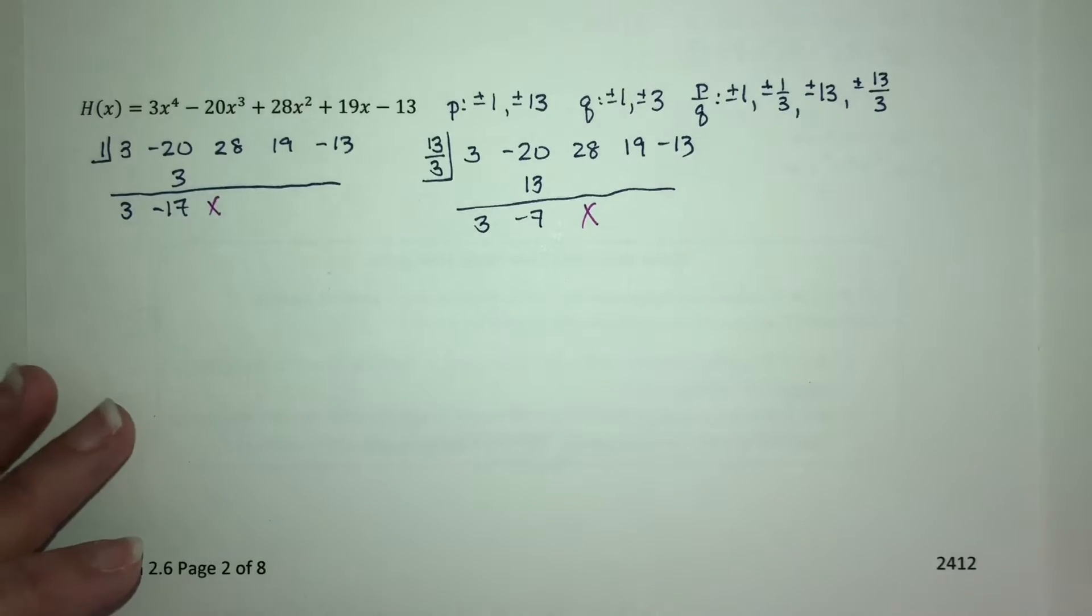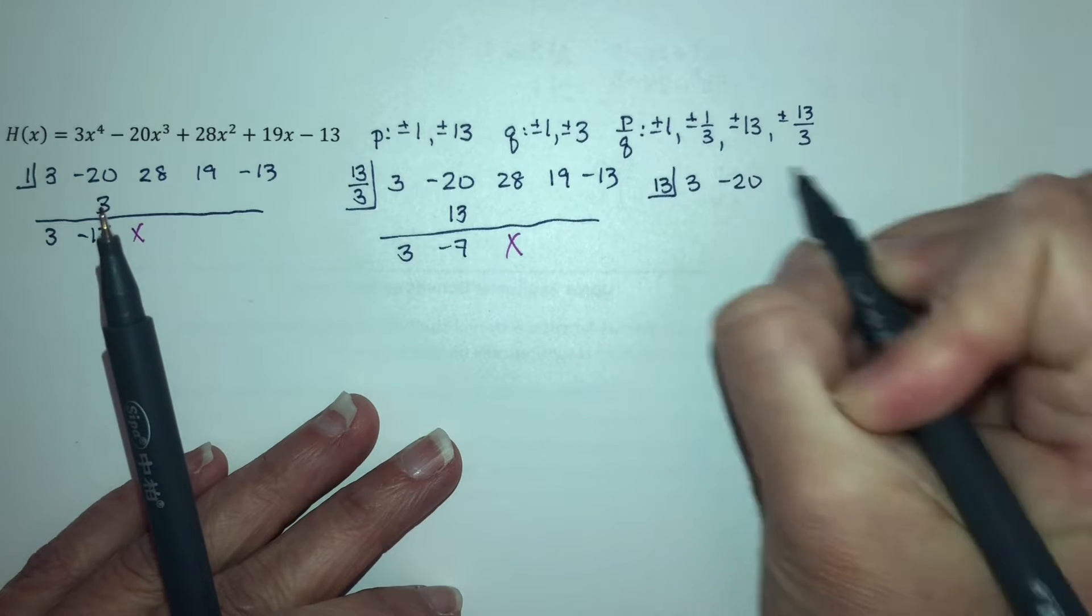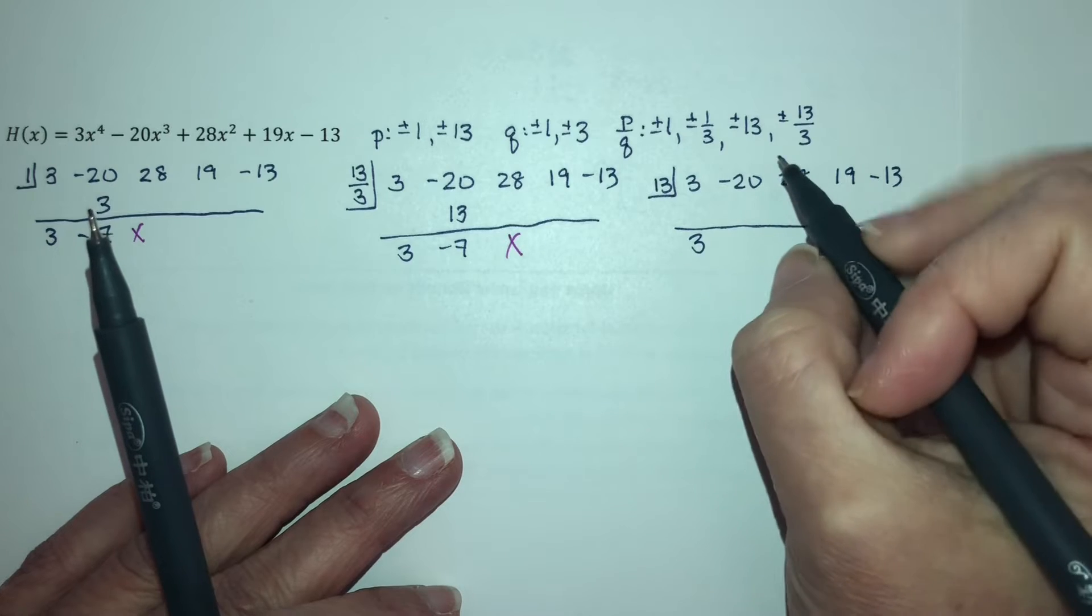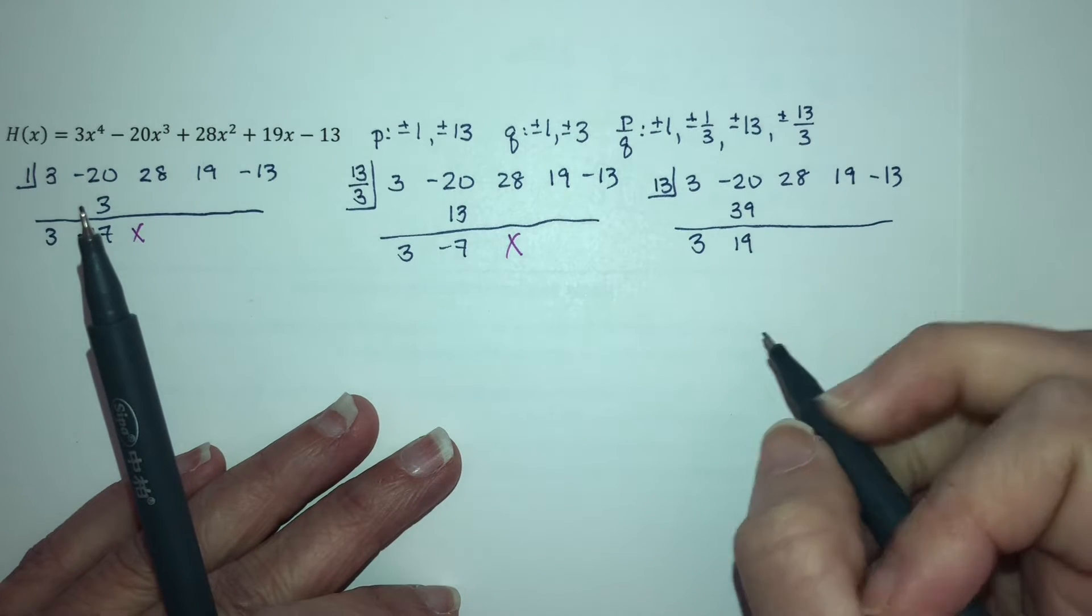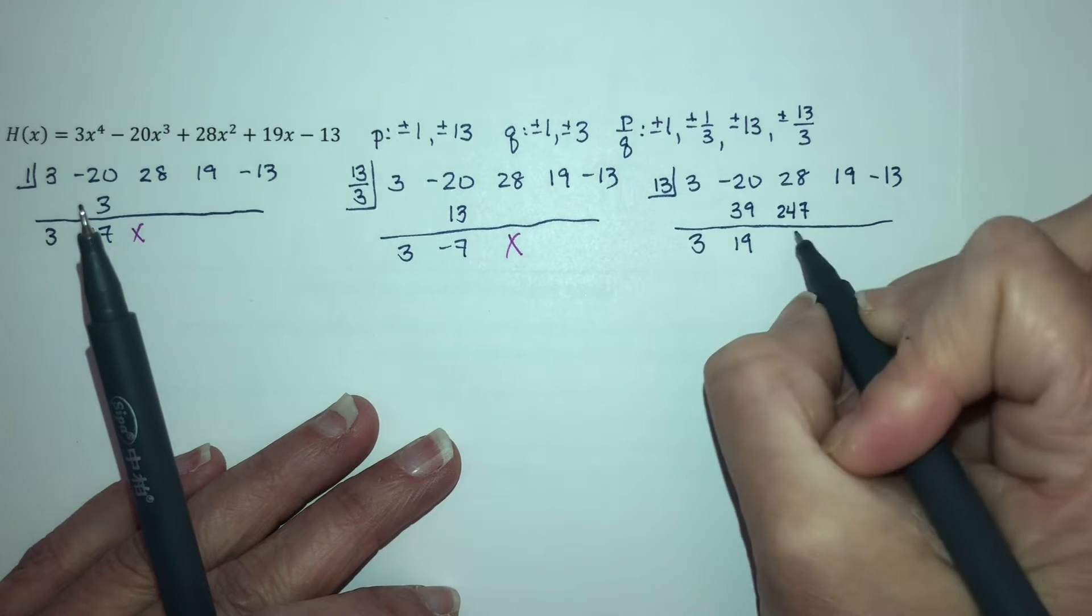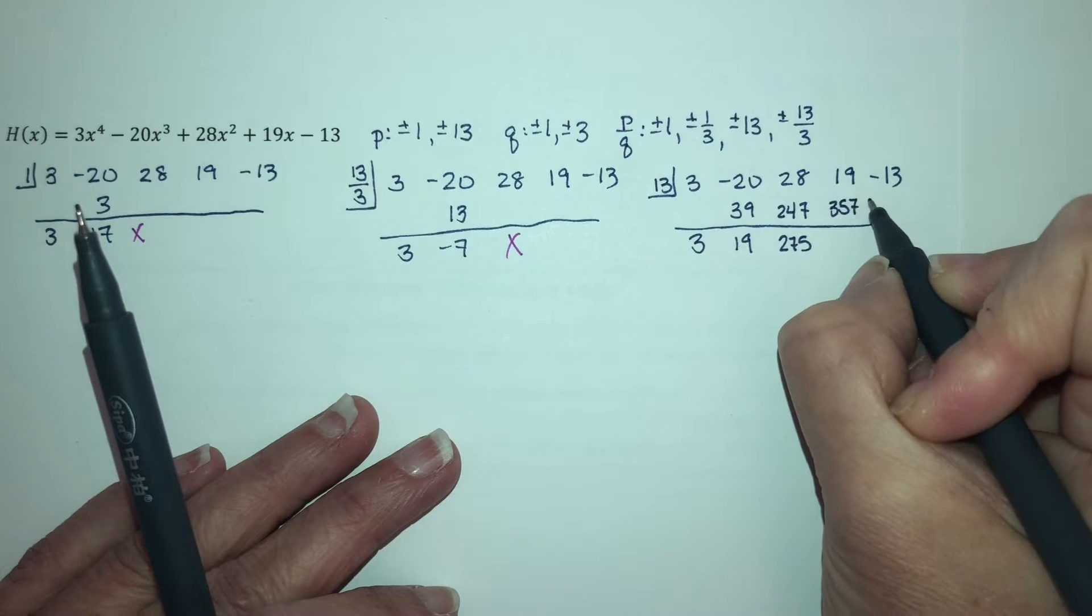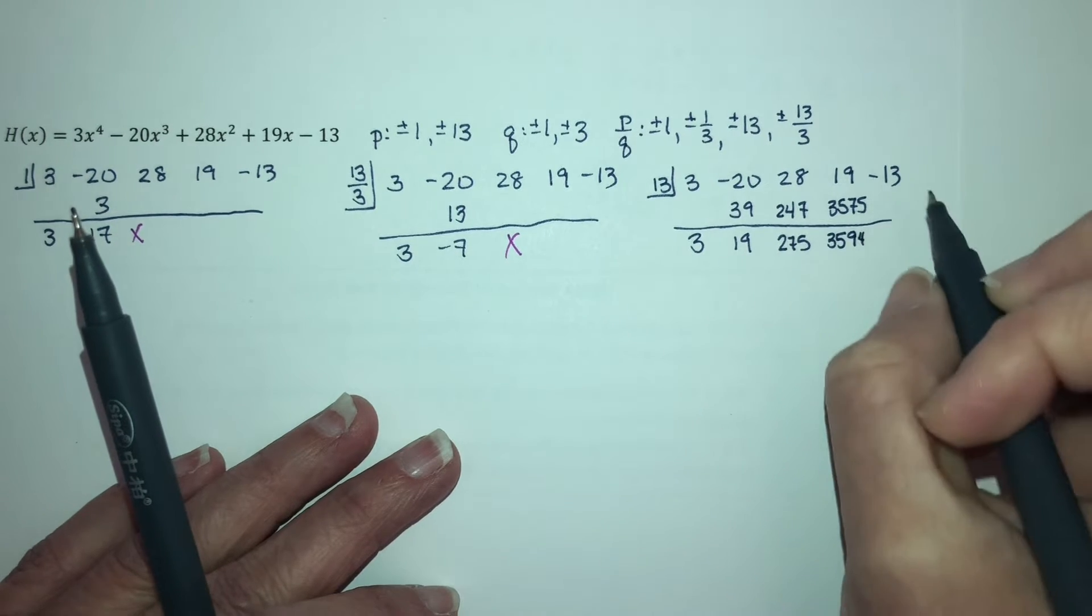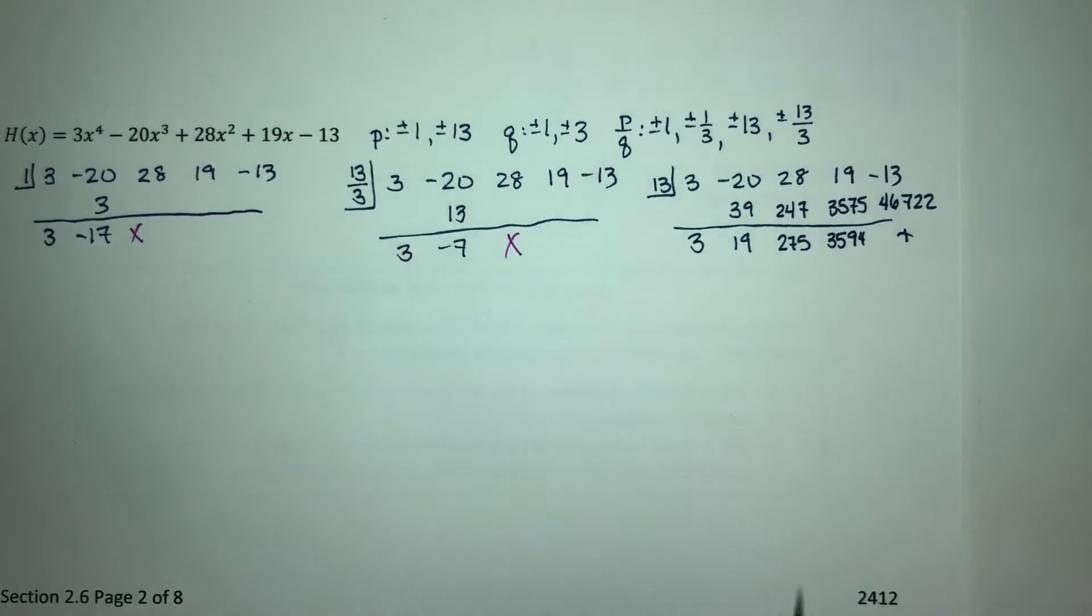Now let's do 13 just to make sure. That's my last possibility anyway. Bring down the 3 to get 39, subtract 20 for 19. 19 times 13 is 247. Add that, you get 275. Multiply, you get 3,575, which gives you 3,594. You can see that you're going to get a pretty big number here, which gives me a positive answer there. So my upper bound here is 13.